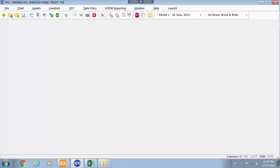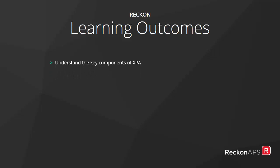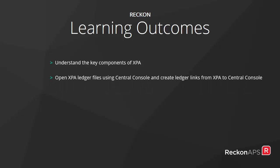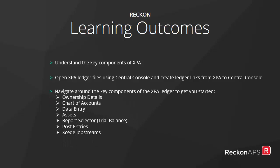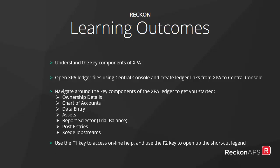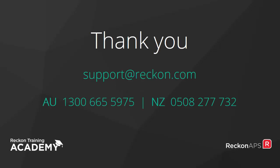So in conclusion for this course, our learning outcomes have been: we have understood the key components of XPA; we have opened the XPA files using Central Console to create that ledger link from XPA to Central Console; we have navigated around the key components of the XPA Ledger to get you started. We have looked briefly at the ownership details, file details, the chart of accounts, the data entry, assets, report selector, posting entries, job streams, and also documents and notes. We have used the F1 key to access online help and the F2 key while in data entry for the shortcut legends. On behalf of the Reckon Training Academy, thank you for your time. If you need further support please contact us on these numbers. Thank you.